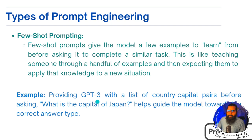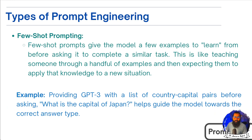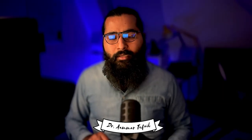For example, you provide GPT-3 or GPT-4 with a list of country-capital pairs before asking 'What is the capital of Japan?' This helps guide the model towards the correct answer type, giving you better chances of accurate data. That is why we prefer Few-Shot Prompting over Zero-Shot Prompting. Zero-Shot Prompting is typically used when you want to test a model.